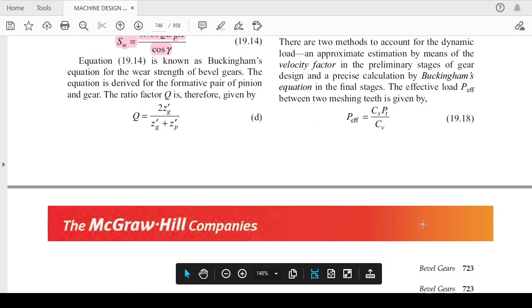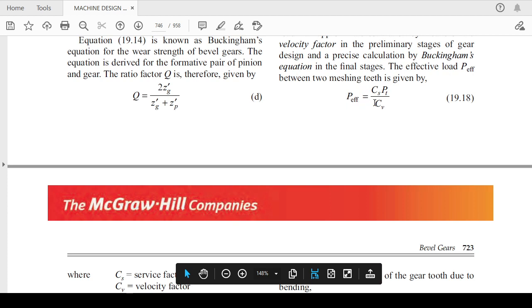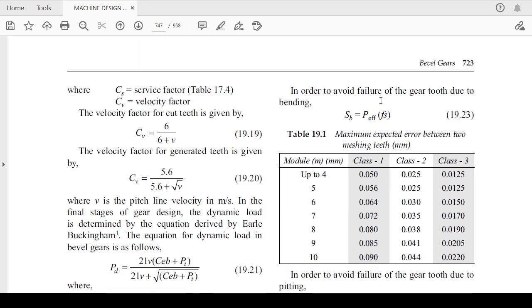There is a dynamic load which you can calculate with the help of Buckingham's equation. P effective will be equals to C_s P_t y C_v, where C is your service factor, C_v is your velocity factor. If you have done the calculation of the spur and helical gear, then you can easily recall this value.